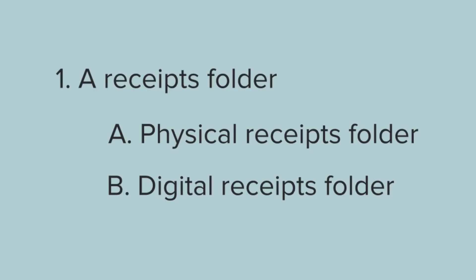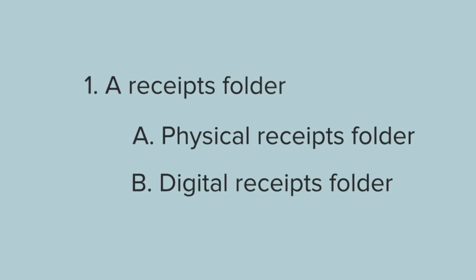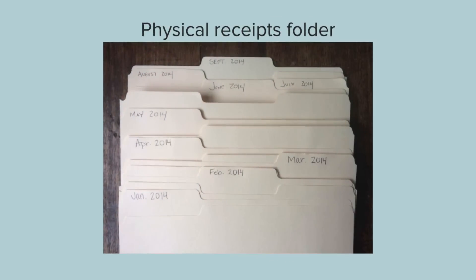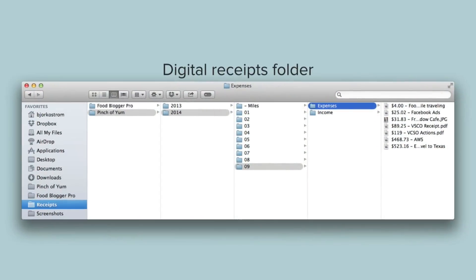Number one: a receipts folder. You need a physical and a digital receipts folder. With the physical receipts folder, it's going to be something that's really simple. All that you need is some Manila folders that you can mark out by month and put all of your physical receipts into those folders. The digital receipts folder works in a similar way, but it's going to be on your computer.